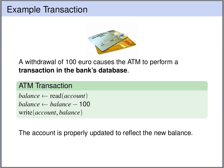Let's consider the following scenario. We are standing at an ATM machine and we are withdrawing 100 euros. Behind the scenes the ATM performs a transaction on the bank's database. The transaction reads the current value in the bank account, decreases it by 100, and then updates the balance on the bank account. After this transaction the bank account is properly updated to reflect the new balance.